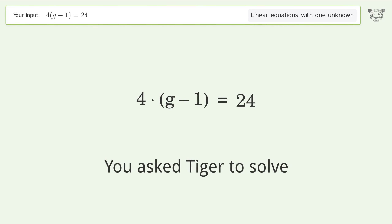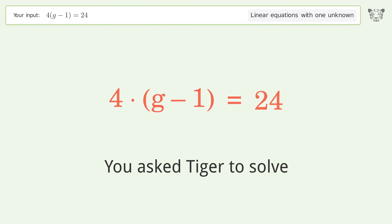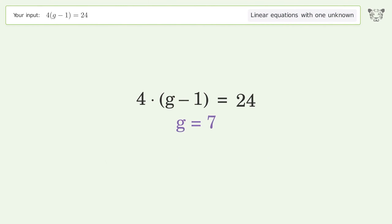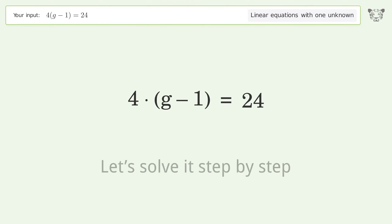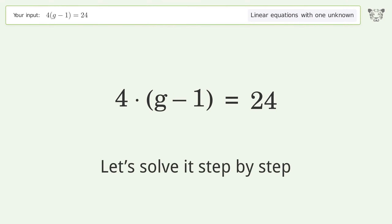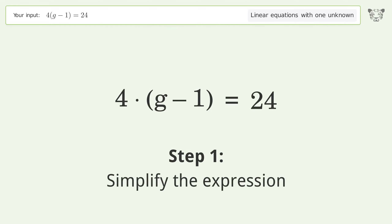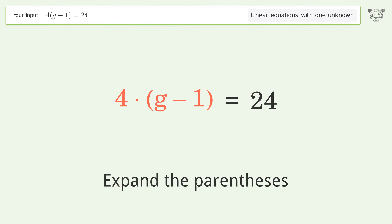You asked Tiger to solve this — it deals with linear equations with one unknown. The final result is g equals 7. Let's solve it step by step. First, simplify the expression by expanding the parentheses.